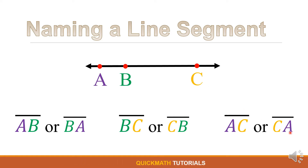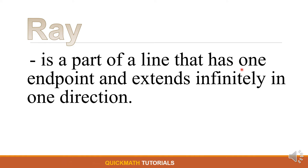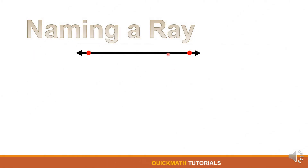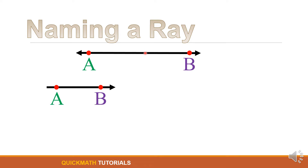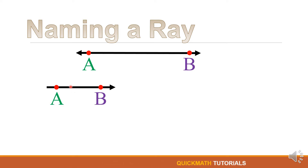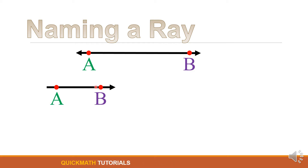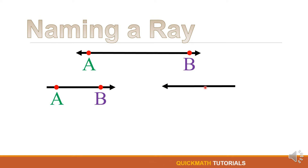Another subset of a line is a ray. A ray is a part of a line that has one endpoint and extends infinitely in one direction. For example, we have a line with two points A and B. If we cut this line from A, it gives us a ray that has points A and B. A line extends infinitely in opposite directions and has no end; however, in a ray there is one endpoint — here at point A — and at point B it extends infinitely, so there is no endpoint there.